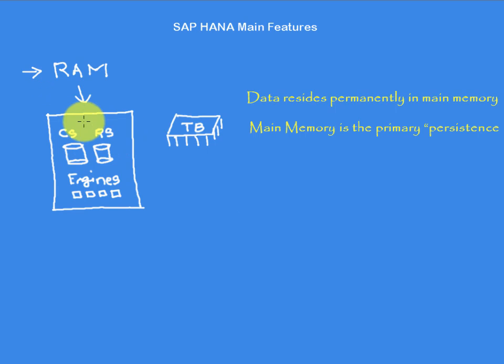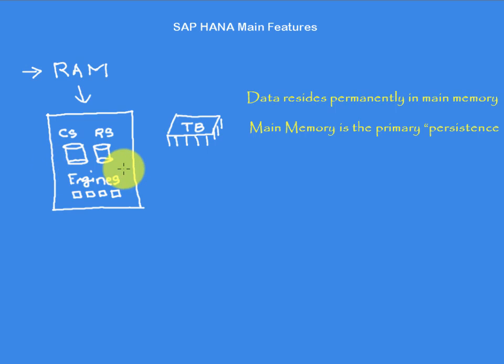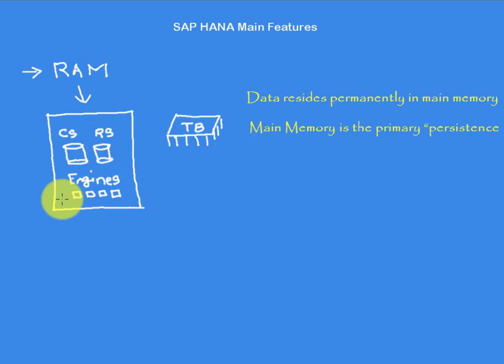Coming back to HANA, if we take a look at this diagram, we have two different data stores inside the RAM — one called the column store and another one called the row store. Both of these reside inside the RAM. If you create a table of a row type or a column type, both of them are still living inside the RAM. The same goes with all the engines — they all stay within the RAM.